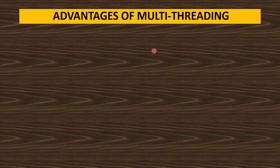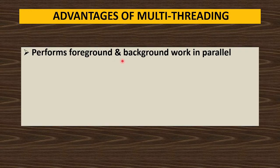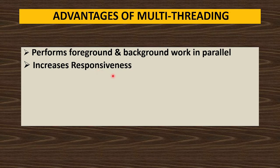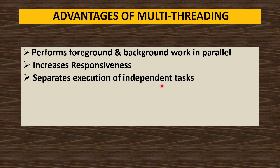The advantages of multi-threading: it performs foreground and background work in parallel. Multiple threads can work together — some in the foreground and some in the background — which increases responsiveness. It also separates the execution of independent tasks, meaning one task is executed independently of others. For example, when working in Word, you can simultaneously listen to songs on YouTube.